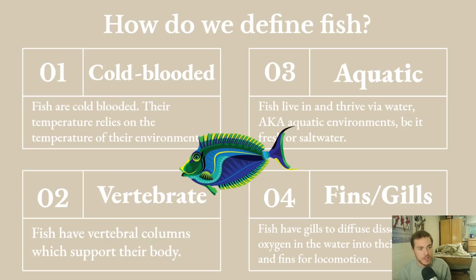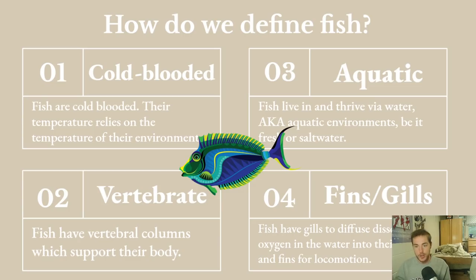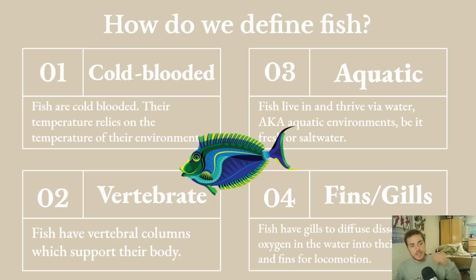The first thing is that fish are cold-blooded, meaning your temperature relies on the temperature of your environment — you are not capable of creating and pumping heat throughout your body. If it's hot in the water, you are hot; if it's cold, you are cold. This can be an adaptation restriction for many animals. Number two, fish are vertebrates — they have vertebral columns which support their body, basically like a spine in us, though it's a little more complicated and diverse than that.